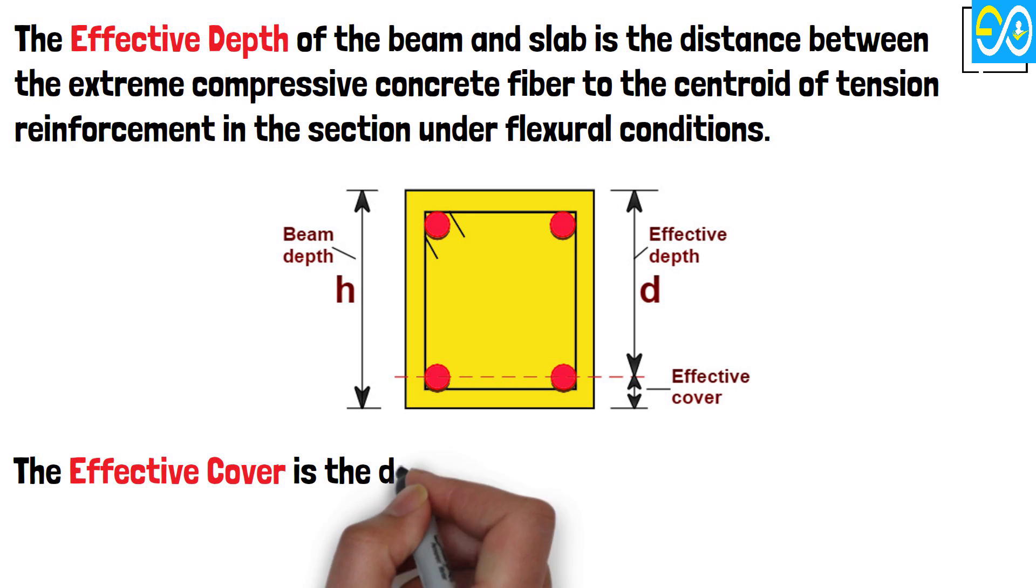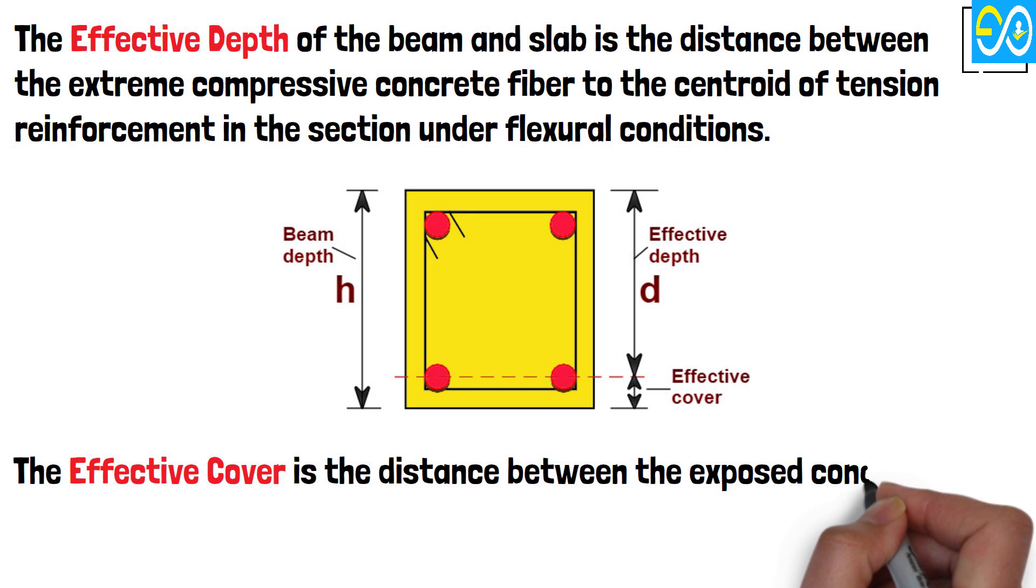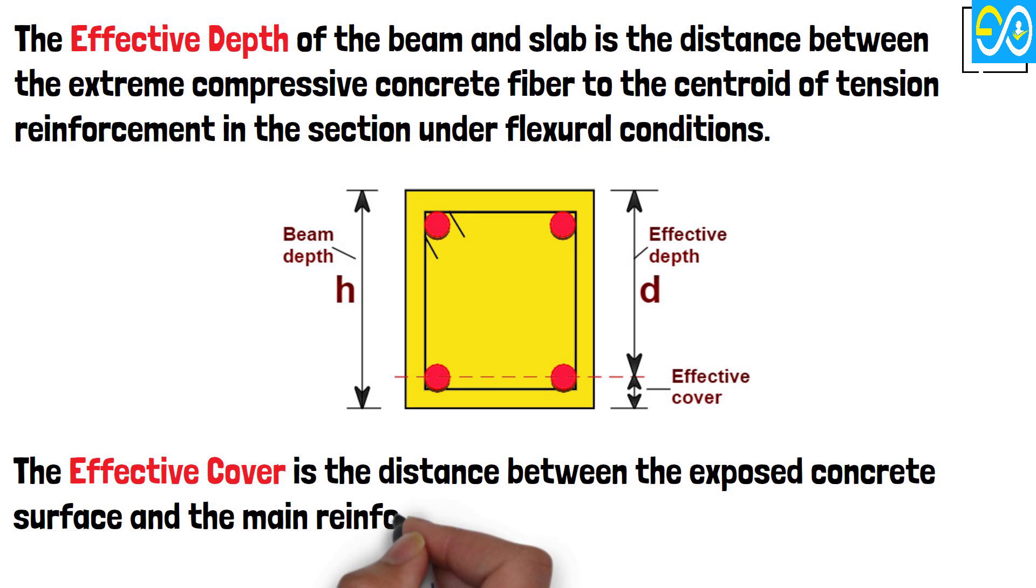The effective cover is the distance between the exposed concrete surface and the main reinforcement centroid.